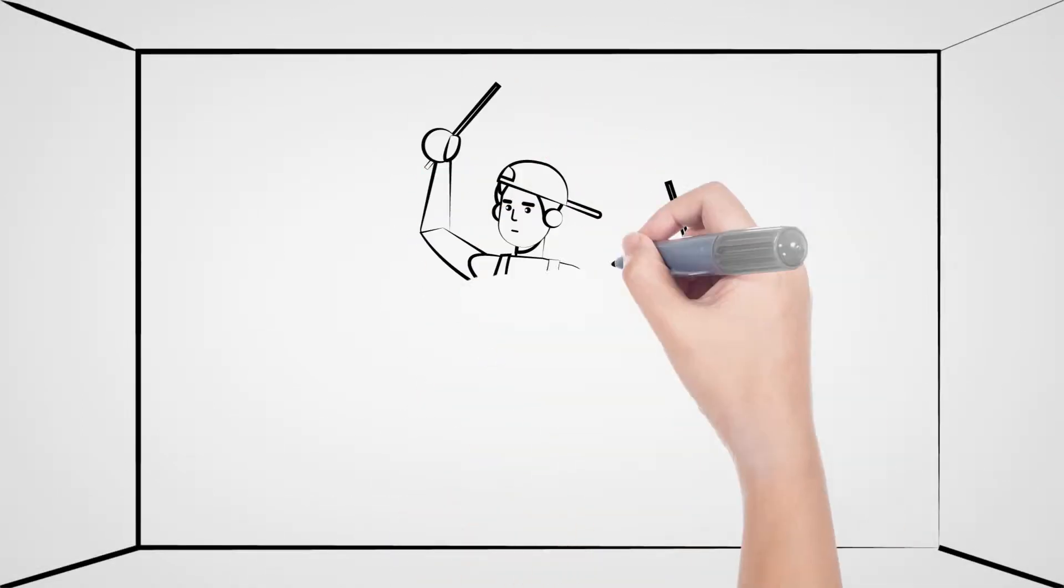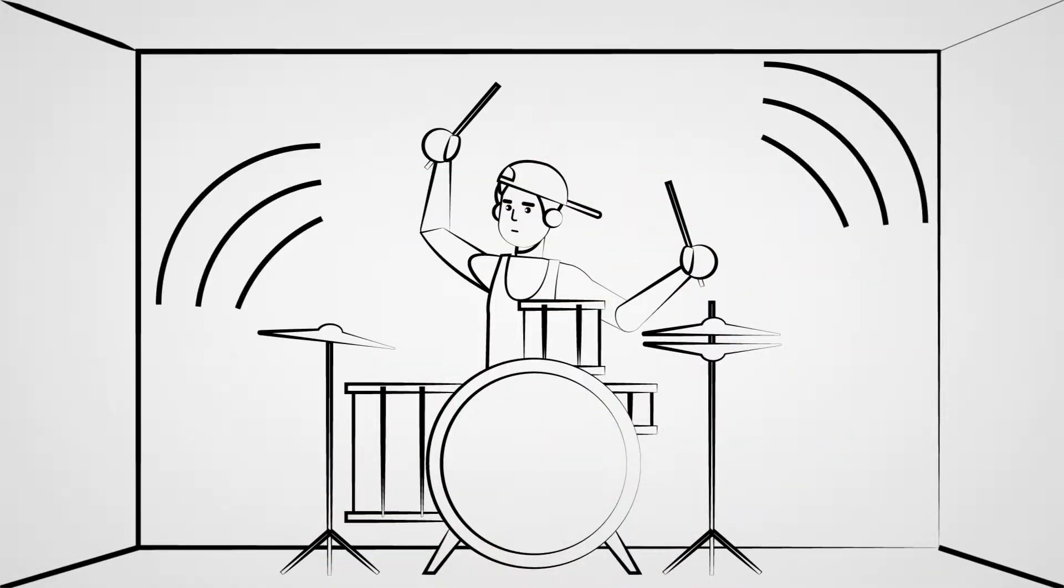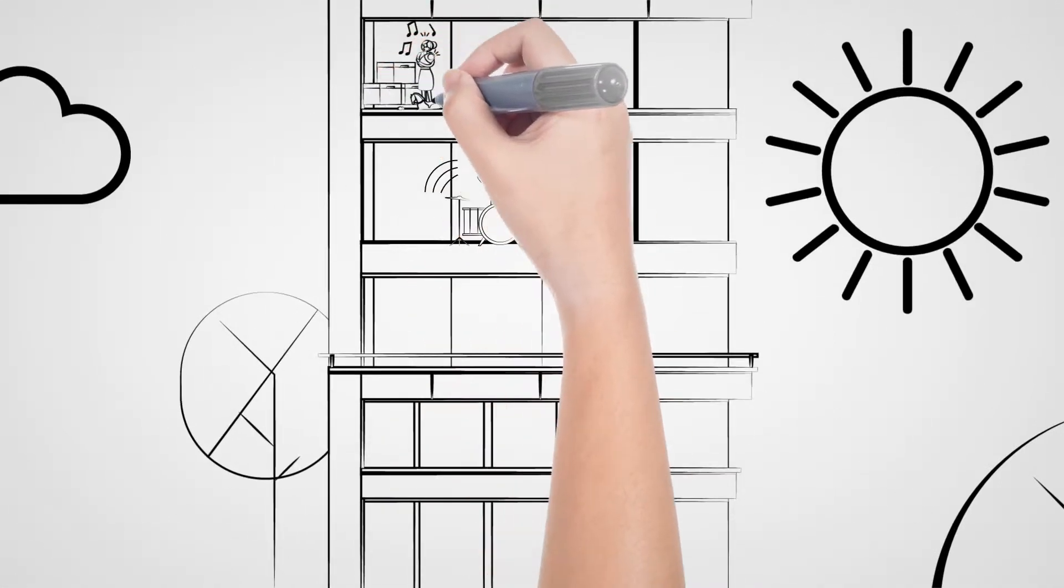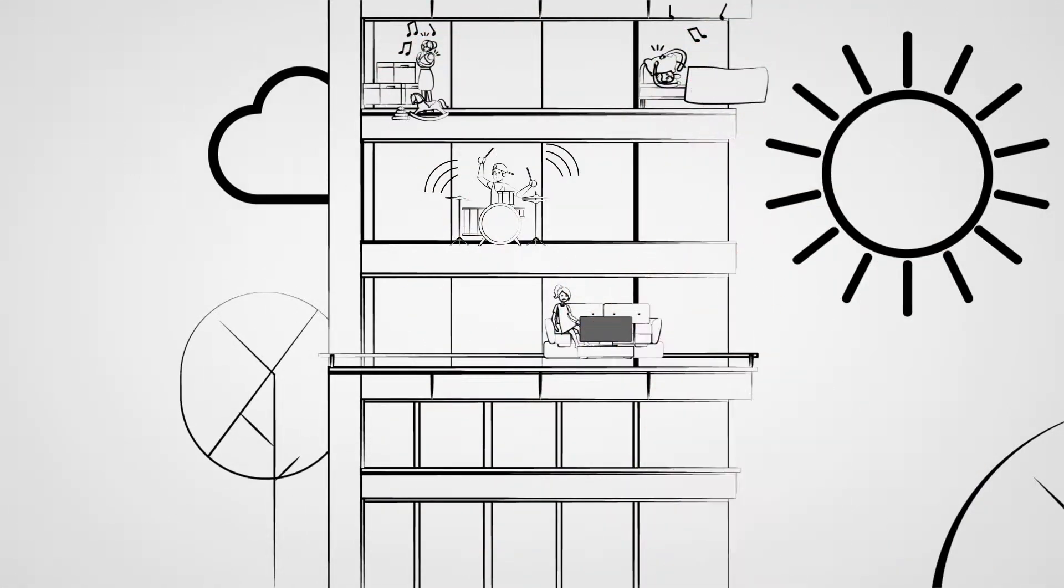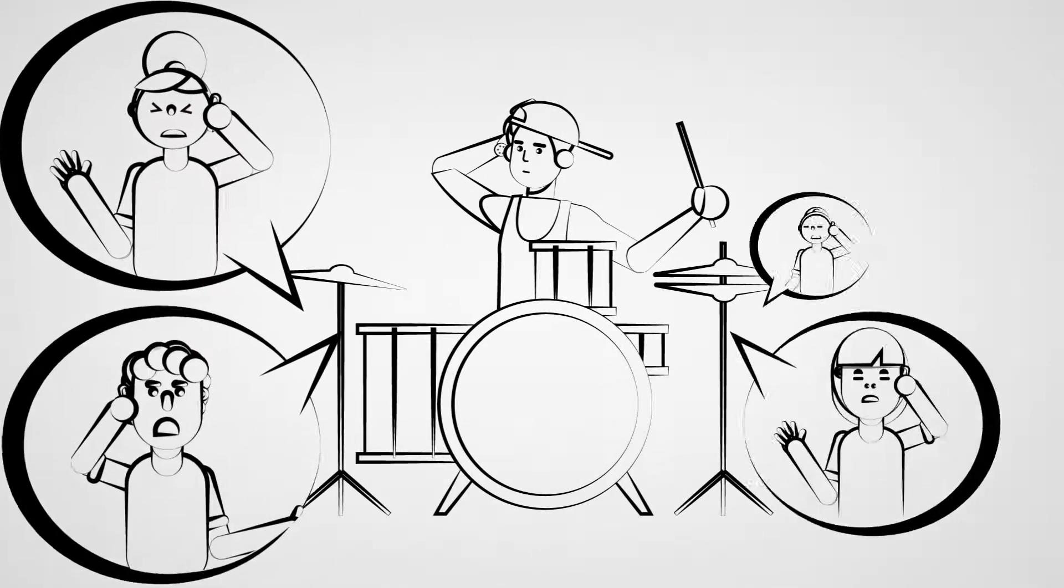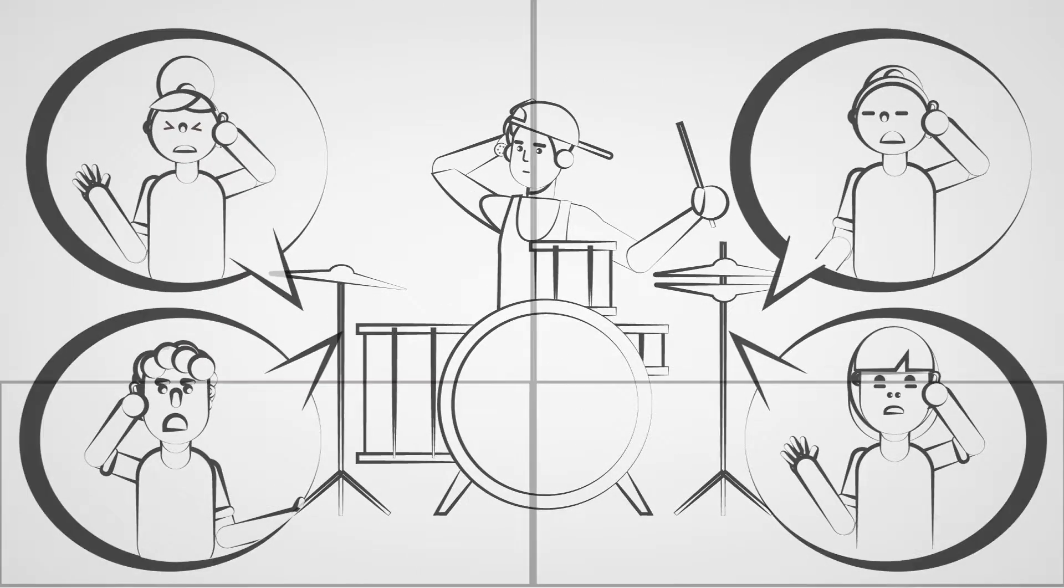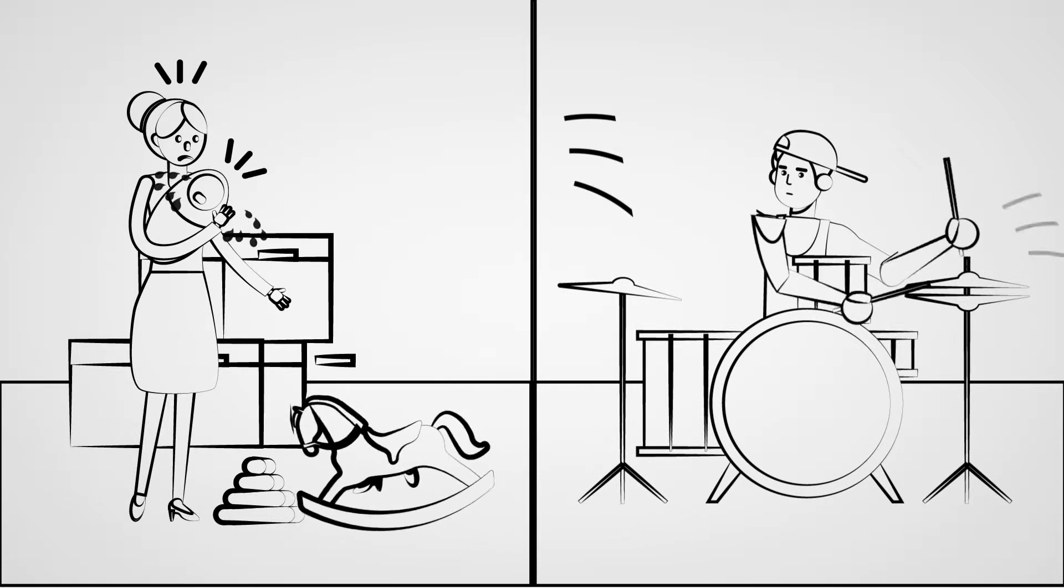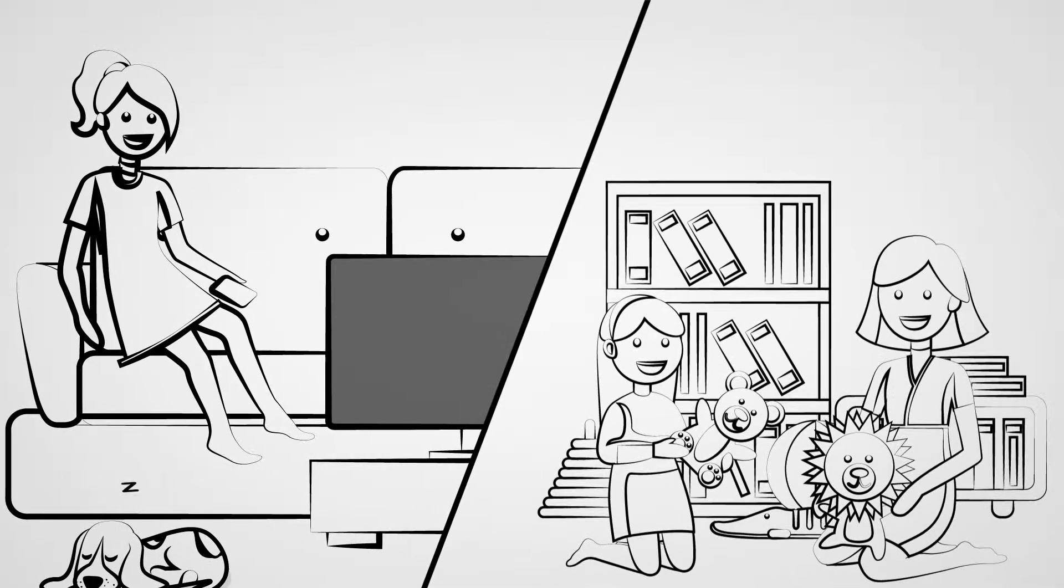The only thing holding him back is more practice, but Bob lives in an apartment and doesn't have a designated space to practice. Whenever he tries, either angry neighbors are complaining about the noise levels or his wife is upset about needing some quiet time.